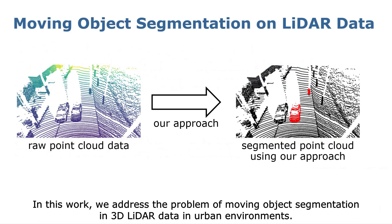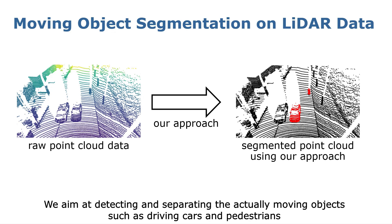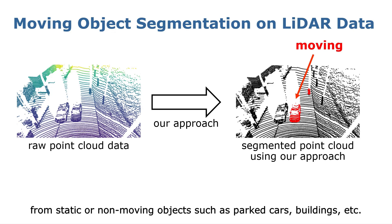In this work, we address the problem of moving object segmentation in 3D LiDAR data in urban environments. We aim at detecting and separating the actually moving objects such as driving cars and pedestrians from static or non-moving objects such as parked cars, buildings, etc.